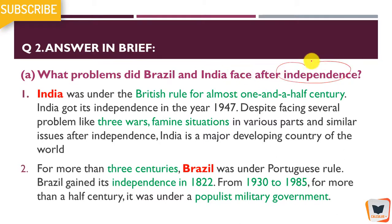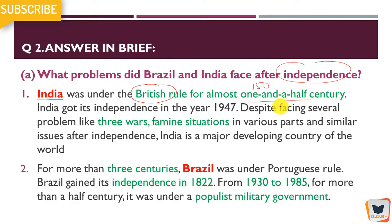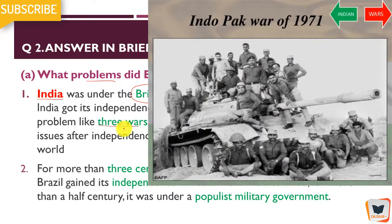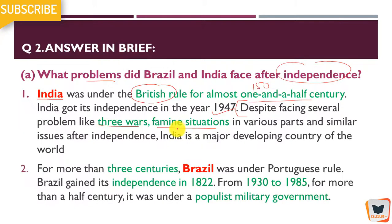Answer in brief: what problems did Brazil and India face after independence? India was under British rule for almost 150 years, or one and a half centuries. India got its independence on 15th August 1947. After independence, India faced several problems like two wars with Pakistan, one war with China, famine situations — meaning food scarcity — droughts, and more.